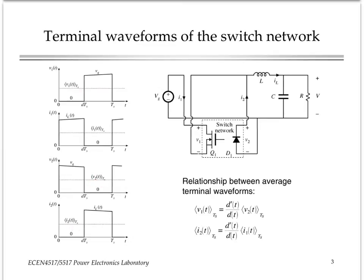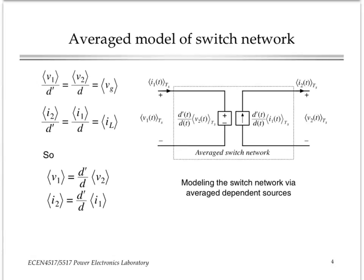And then finally, establish relationships between the average port voltages and currents. With a little bit of algebra, we show that the average port voltages, V1 and V2, are related through the ratio equal to D prime over D, where D is the duty cycle applied to the switch network. And similarly, I2 and I1 are related through the same ratio D prime over D.